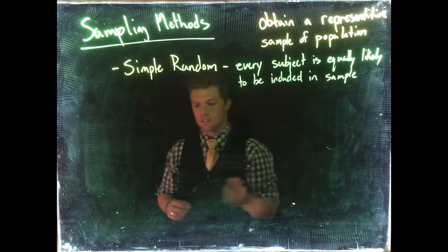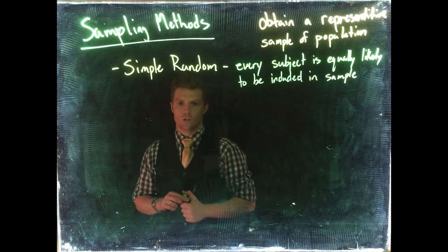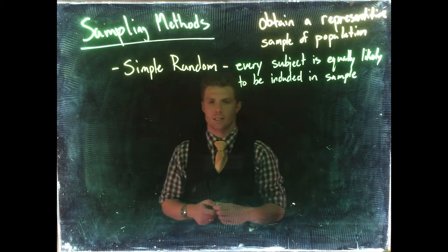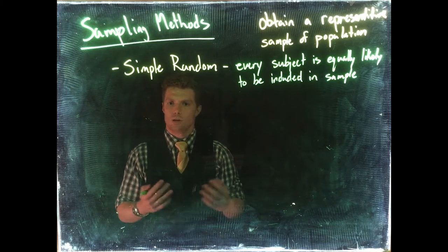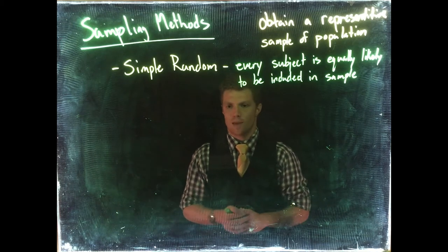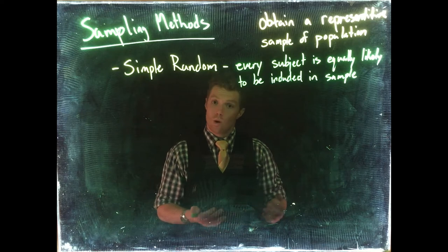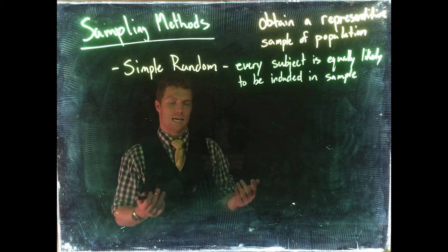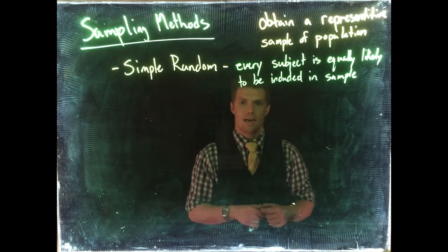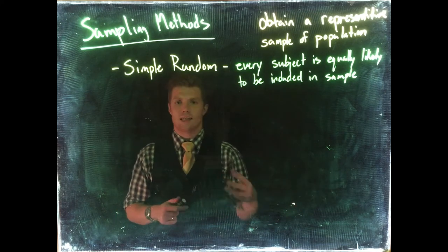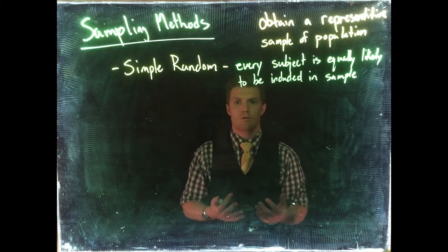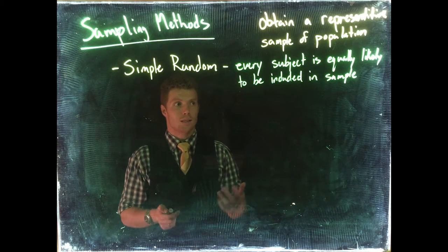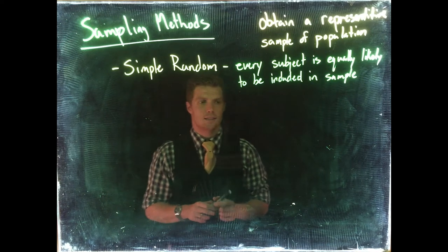We can imagine that if we were to take the population of all students at Casper College and we wanted to take a small sample to figure out how many credit hours they were taking, one way that we could do that is write everybody's name on a ping pong ball and put it into a gigantic box or hat, stir it up, and randomly select out 40 balls. That would provide us a simple random sample where everyone was equally likely to be included in the sample.